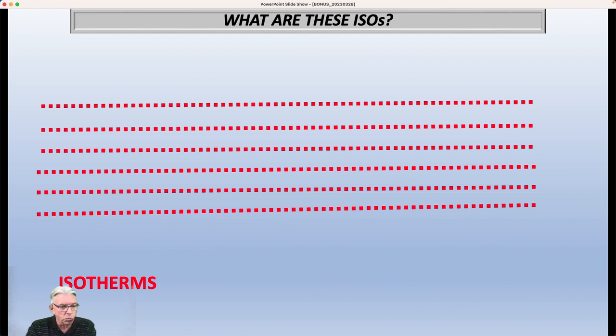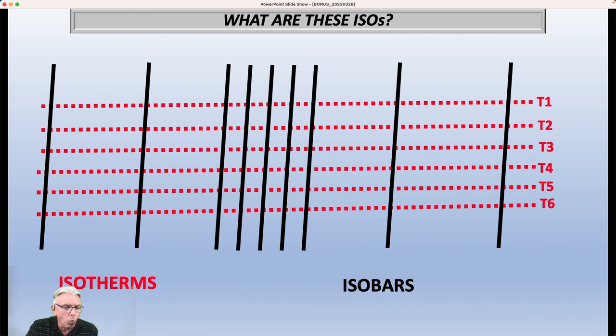So what are these particular isos? Well, these dotted lines are isotherms, or lines of equal temperature. And we're going to label them as T1, T2, T3, all the way up through T6. Now we're going to put some isobars on top of that. And remember the winds basically, not exactly, but basically blow parallel to the isobars. And notice the isobars are not evenly spaced. They're much more tightly packed in here than they are on either side of that tight packing. And we're going to label those isobars P1, P2, P3, all the way up through P9.